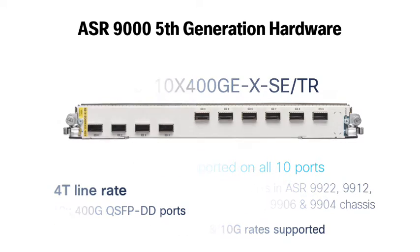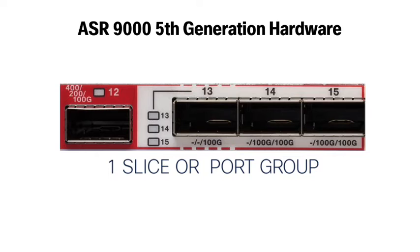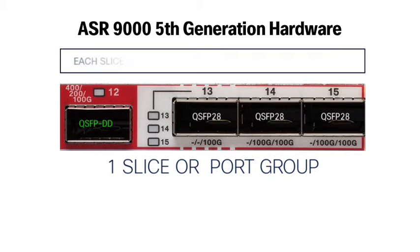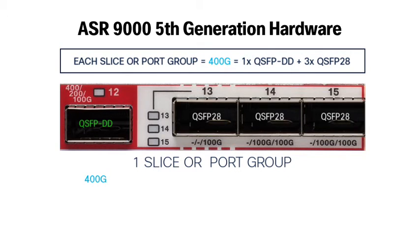The next three line cards take multi-rate support to a whole new level. First are the two combo cards: the 2-terabit supporting 20x100 gig flex and the 800 gig flex cards. Like the multi-rate cards before, these also support a variety of port speeds, but now you have the flexibility of running the ports at a combination of different speeds. This is achieved because of the innovative slice architecture of these fifth generation line cards. One slice, also called a port group, consists of one QSFP-DD port and three QSFP28 ports. Every port group or slice can support a throughput of 400 gig max.